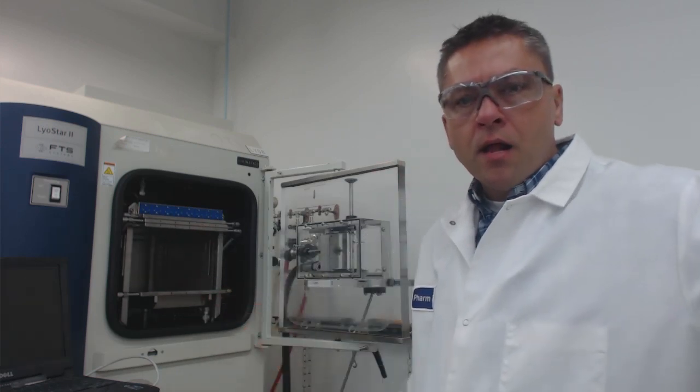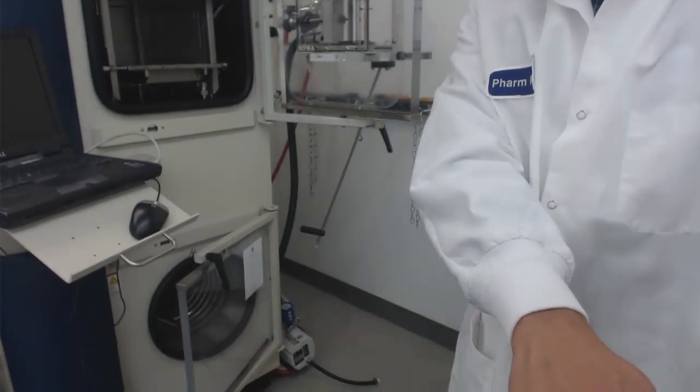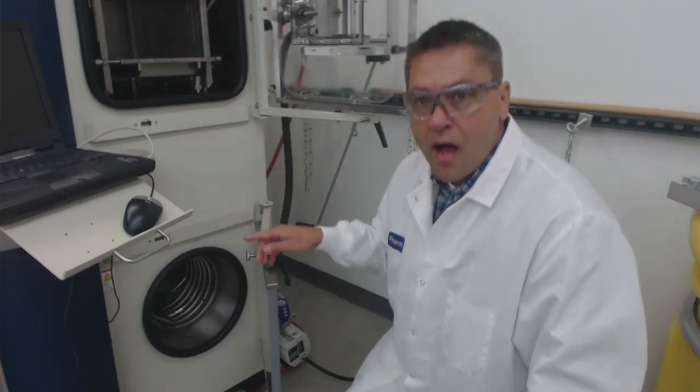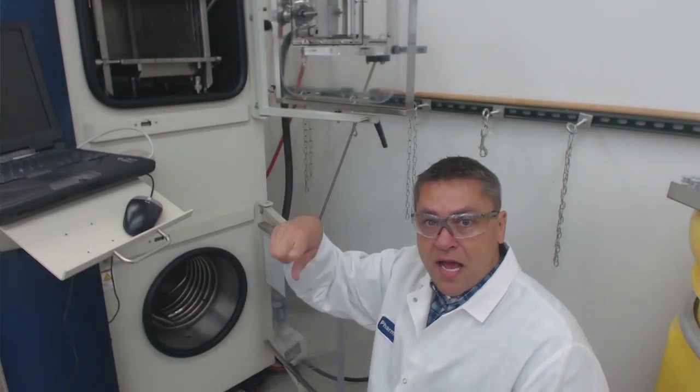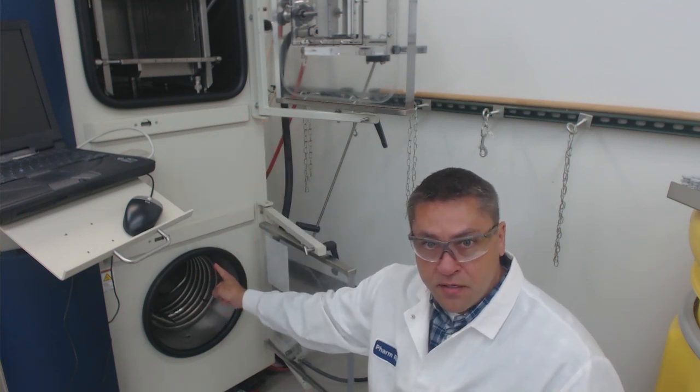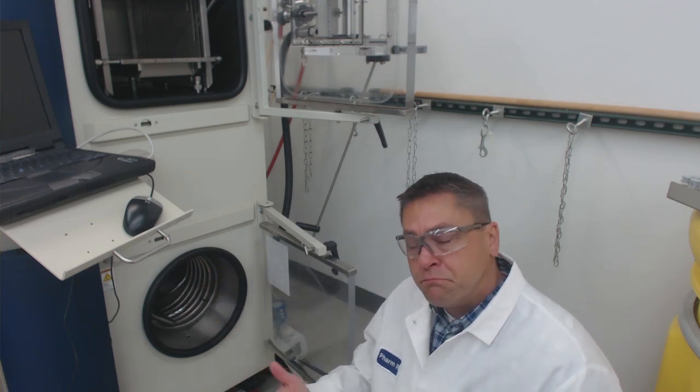For ease of demonstration during this video, I've raised the top two shelves. If we look a little farther down, we see the condenser. The condenser is where ice, as it's removed as water vapor during the sublimation, is trapped on these coils. These coils are kept at a temperature of around minus 65, minus 70.